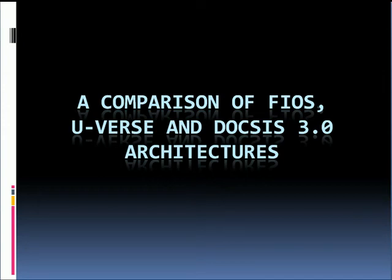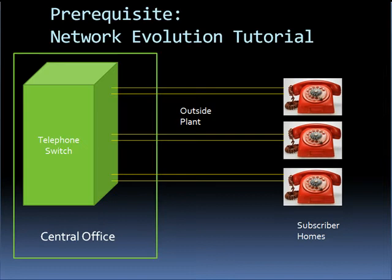In this primer, we discuss the architectures of Fios, U-Verse, and Docsis, comparing the advantages and disadvantages of each. If you haven't already done so, you might want to first have a look at our previous tutorial called Network Evolution, which describes what happened in the outside plant prior to the evolution of Fios.